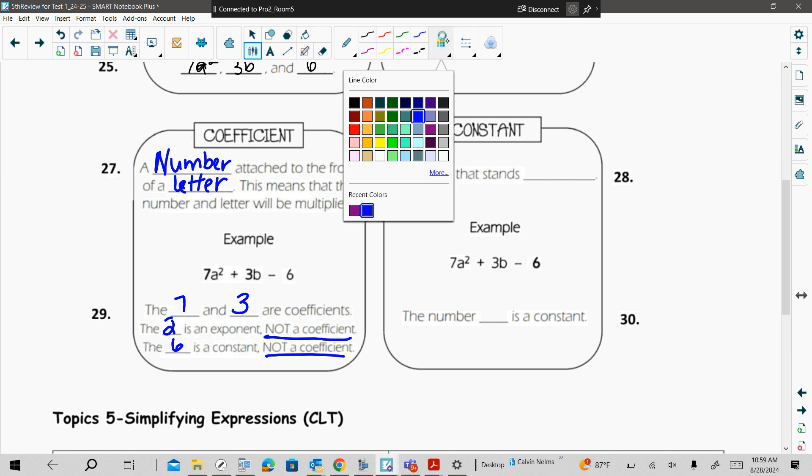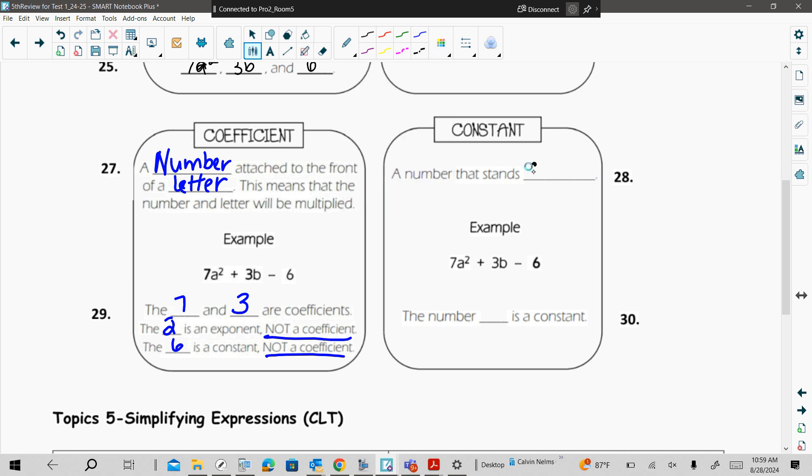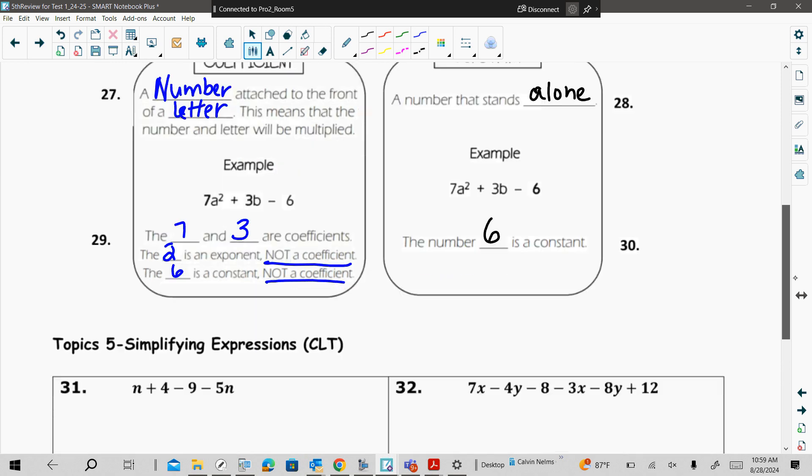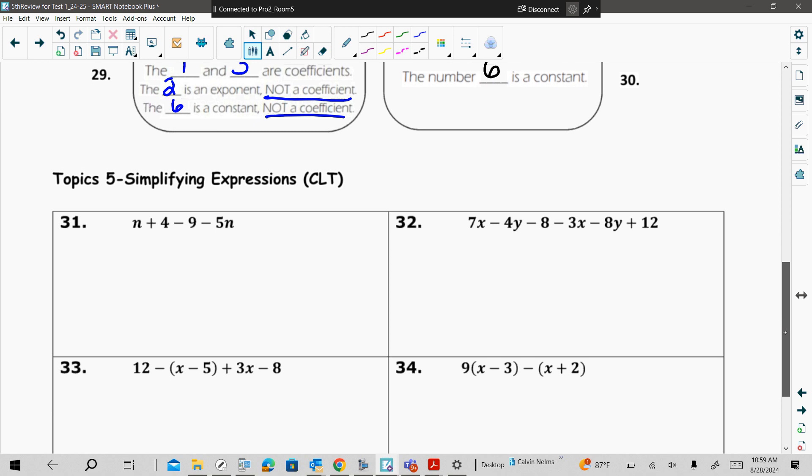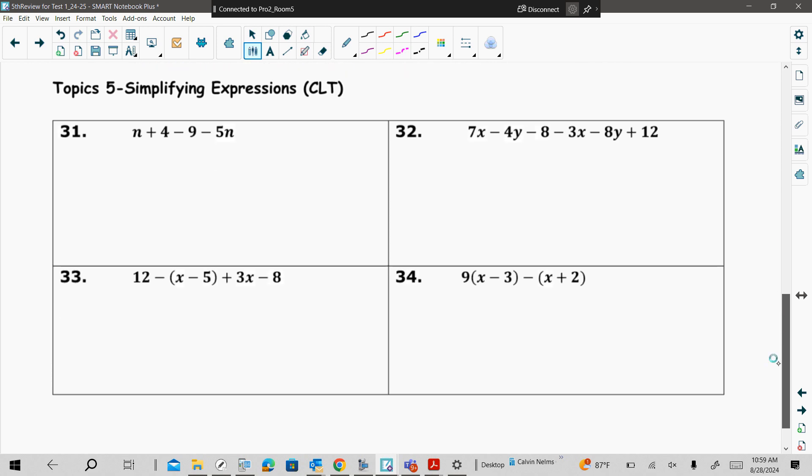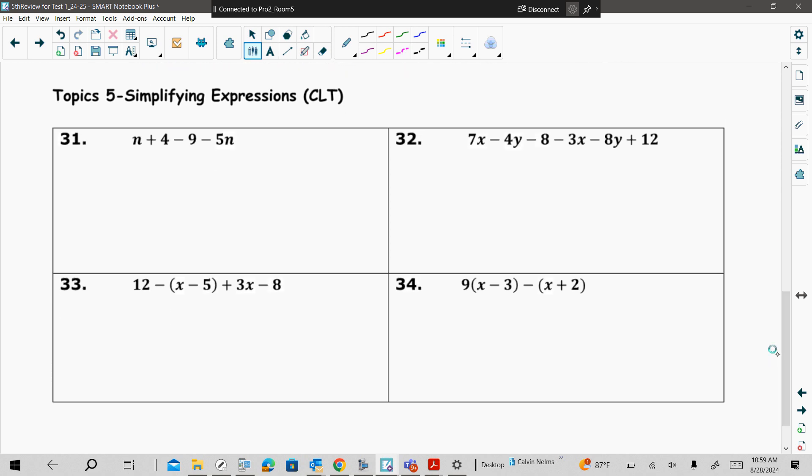All right. And then our constant, a number that stands alone. Yes, the number 6 is the constant. All right. So now topic 5, the last topic that you're going to be assessed on, which is our simplifying expressions, our combining like terms. So that's what the CLT is.